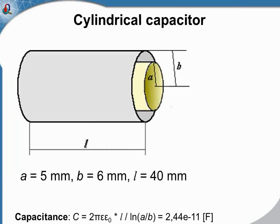This is the cylindrical capacitor. The cylindrical capacitor consists of two cylinders, one inside another, and the dielectric media between the cylinders. You can see the dimensions on the screen. If we neglect the fringe effects, we can calculate the capacitance analytically.